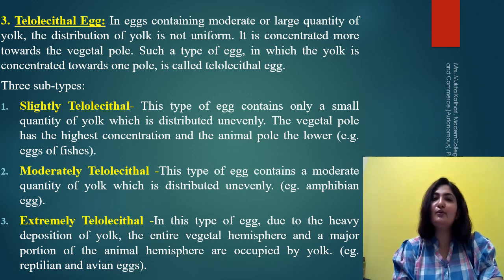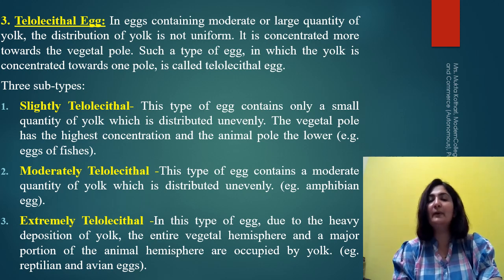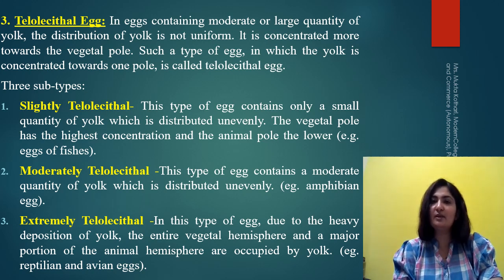In the extremely telolecithal eggs, there is a large amount of yolk present. Because of this large amount, the vegetal hemisphere is totally occupied with yolk. Not only that, but the animal hemisphere is also almost occupied with the yolk.